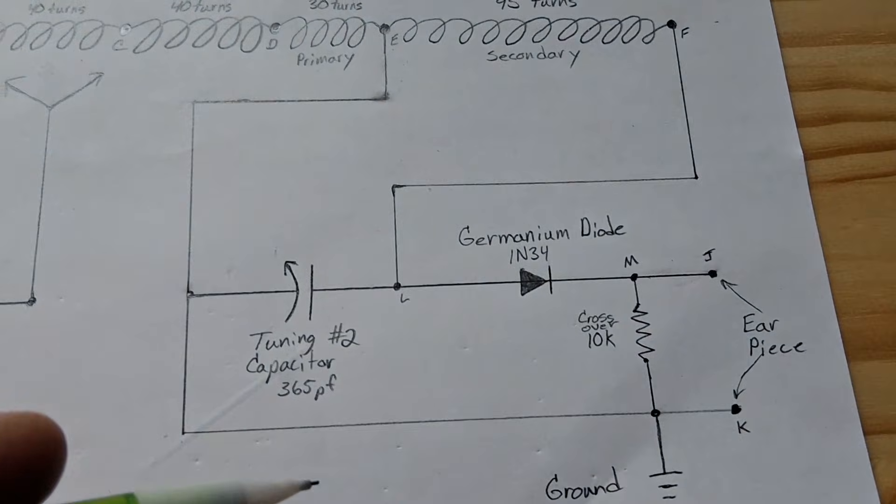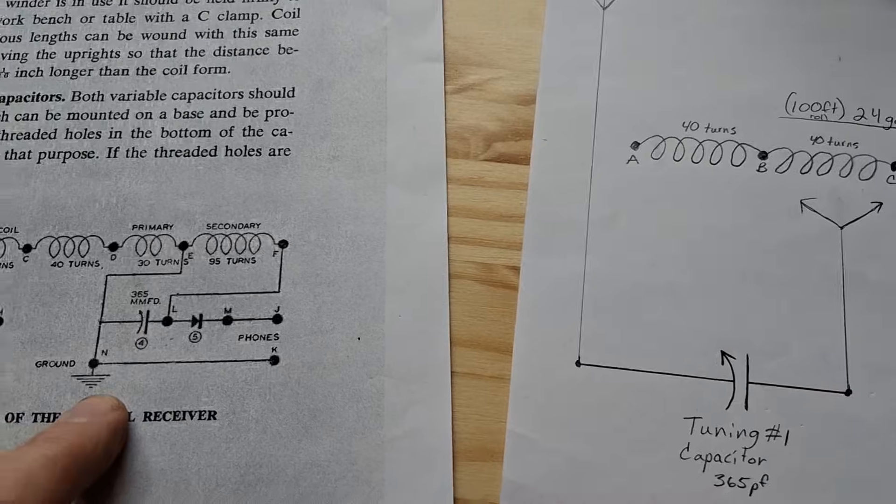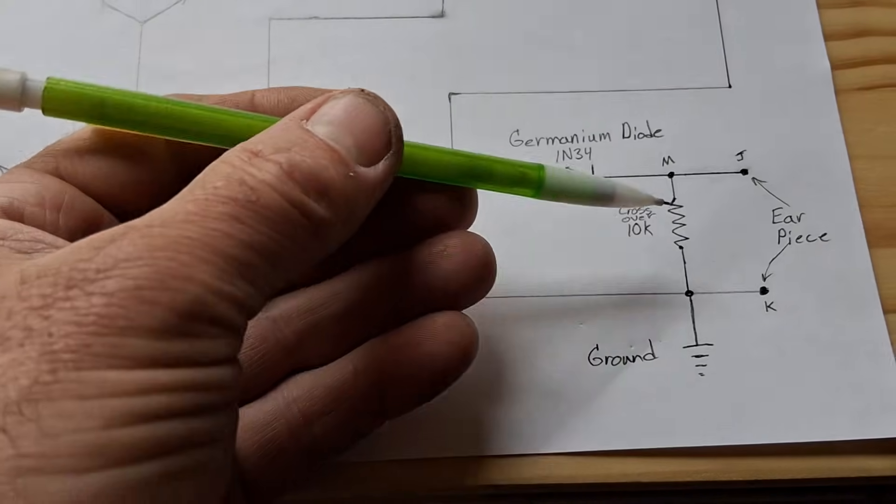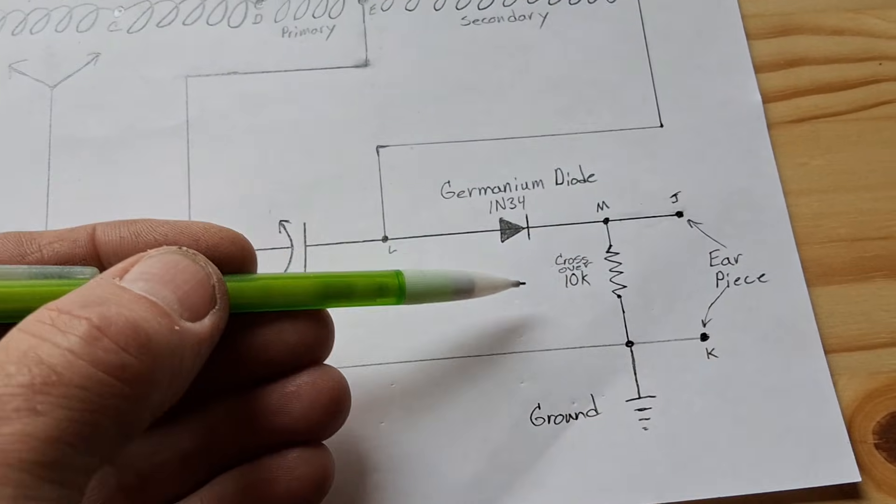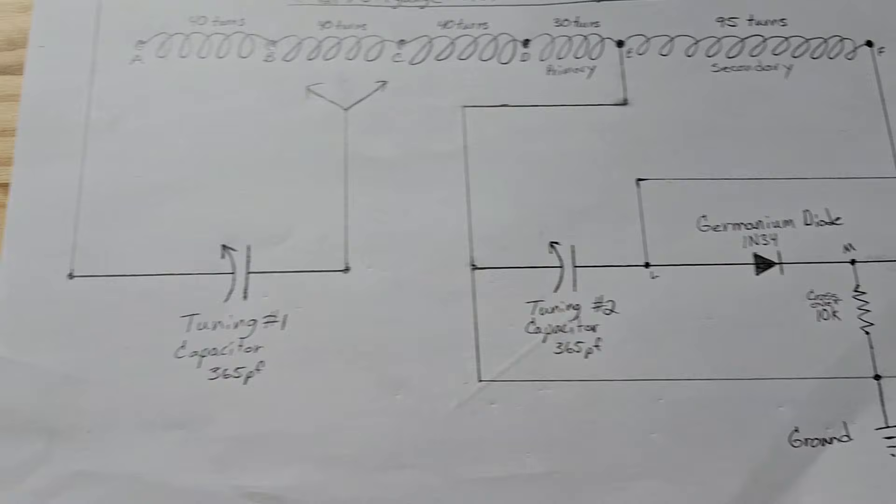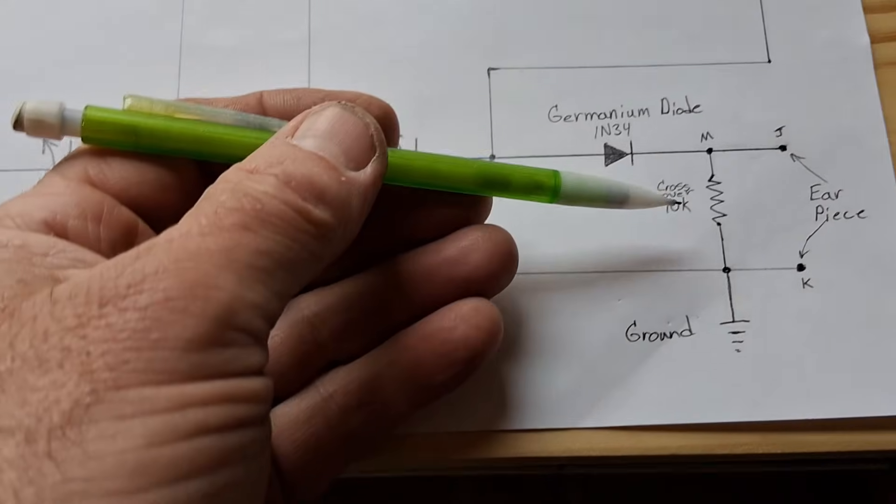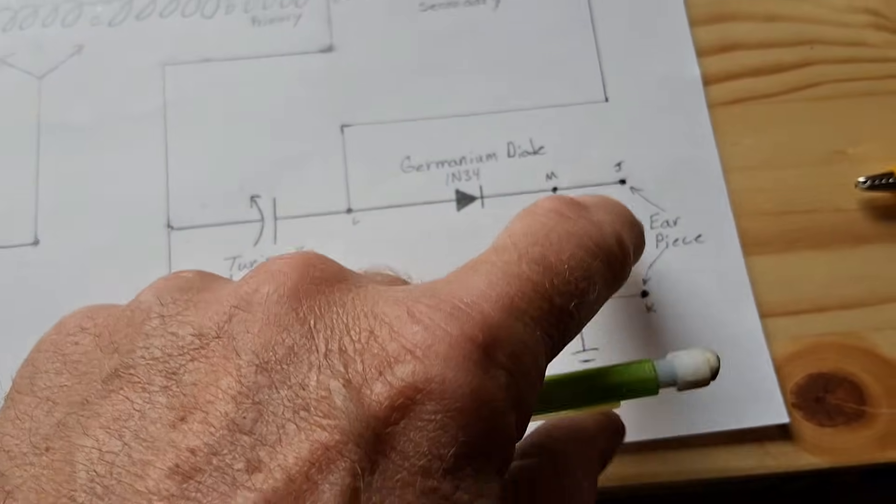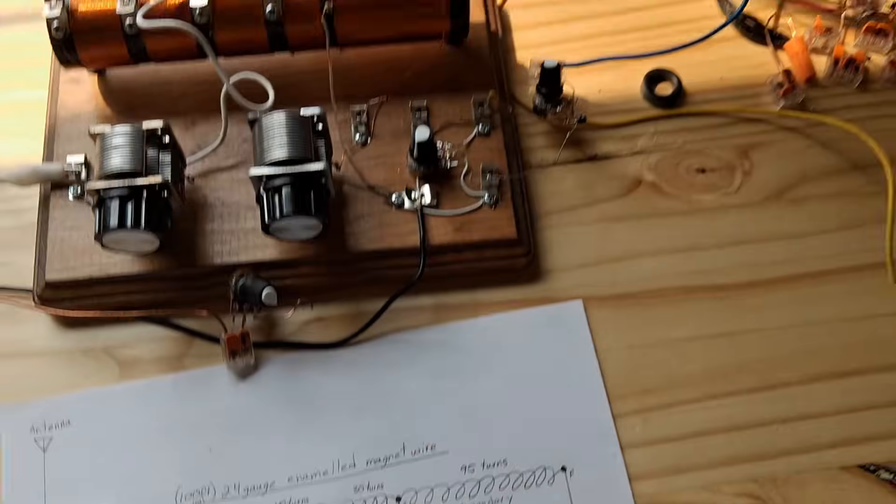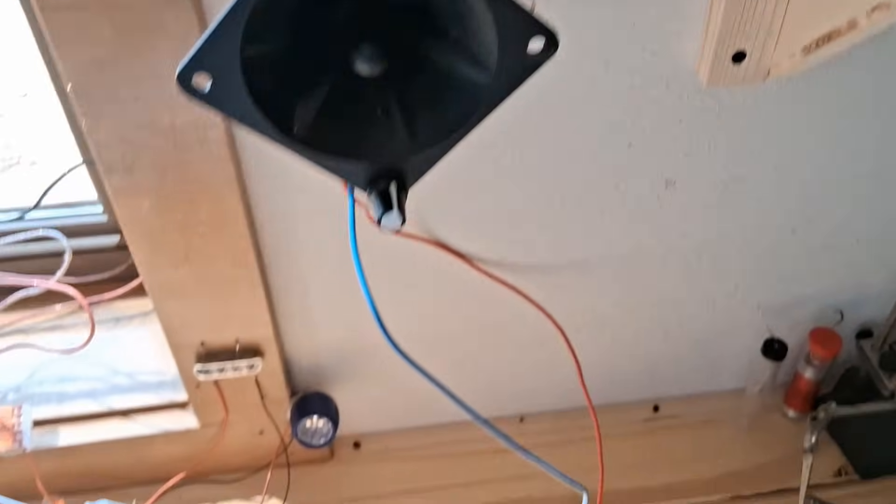And one other alteration that I made from what they have is I got a 10k crossover resistance, and this does help. I don't understand, maybe they had different kinds of earphones or something. But this crossover resistance really helps to hear more from the earpiece. This is the earpiece up there that I was using.